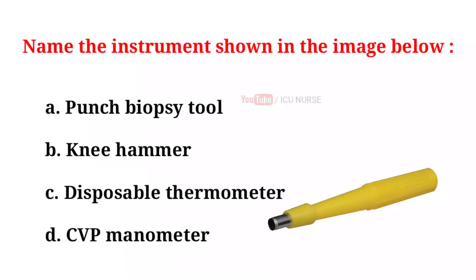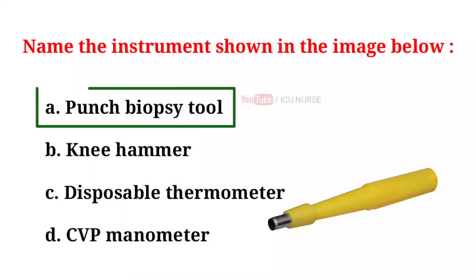Name the instrument shown in the image below. A. Punch biopsy tool. B. Knee hammer. C. Disposable thermometer. D. CVP manometer. And the correct answer is A. Punch biopsy tool.